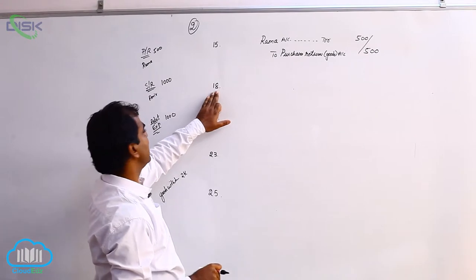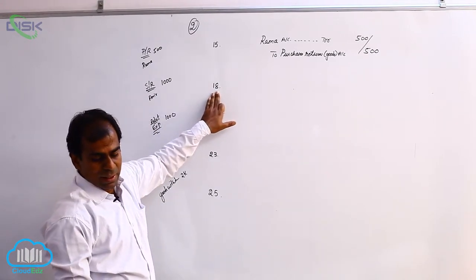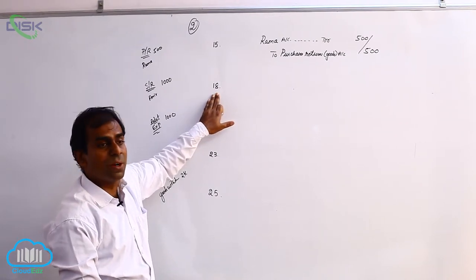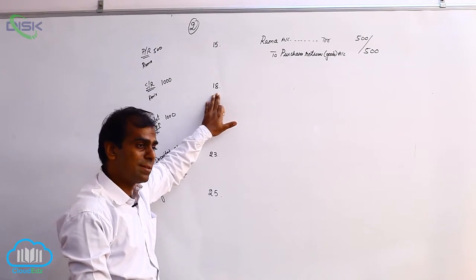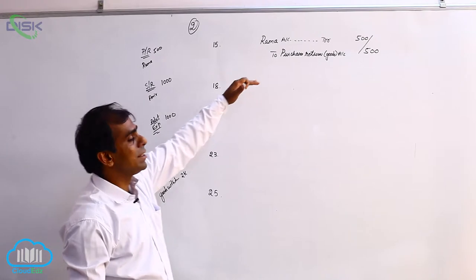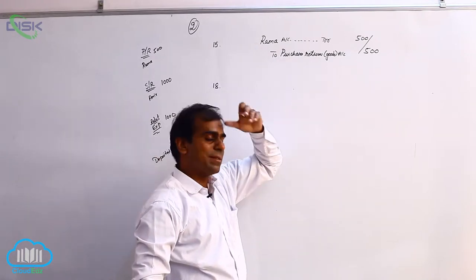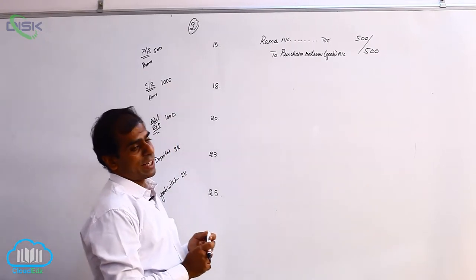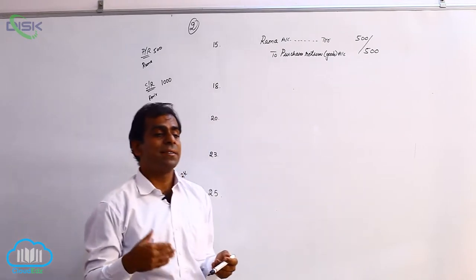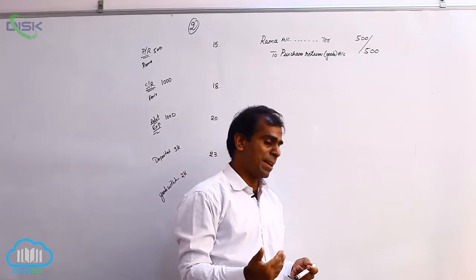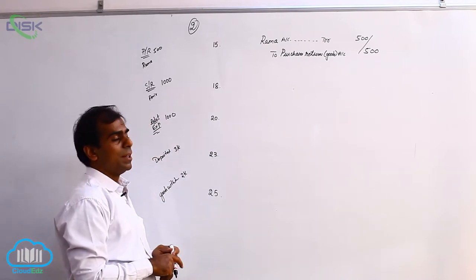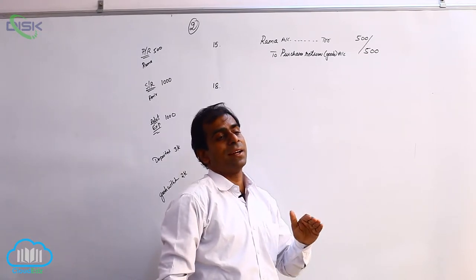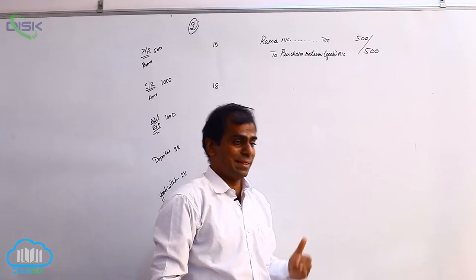The next transaction on 18th is goods returned — Amir returned the goods. We had sold goods to Amir on credit on the 2nd. Just as we returned goods to someone due to defects, similarly when we sell goods on credit and customers find some defects or damages, they can return the goods. The question of returning goods arises only for credit purchase or credit sale of goods.